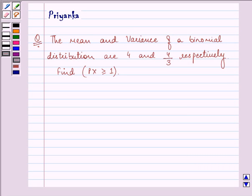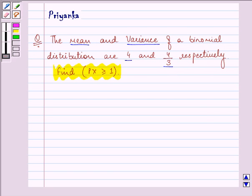Hi friends, how are you all today? The question says the mean and variance of a binomial distribution are 4 and 4 by 3 respectively. Find probability of X is greater than or equal to 1.